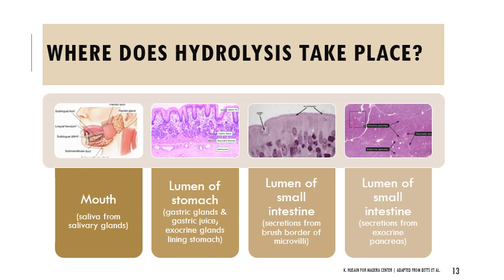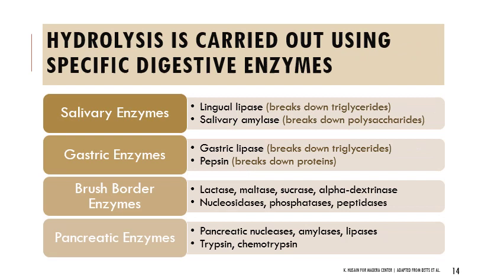We also have secretions coming from the liver, gallbladder, and specifically the exocrine pancreas. You don't need to memorize all of these enzymes and where they're produced, but start practicing thinking about the names. For example, maltase is probably an enzyme that breaks apart the sugar maltose; peptidases are involved in breaking down protein because protein has peptide bonds; lipases are involved in lipid digestion. Start learning these terms and applying them accordingly.